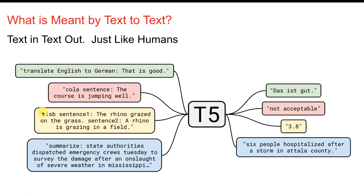STSB is a common sub-component of many benchmarks. It measures how similar two sentences are — for example, 'the rhino grazed on the grass' versus 'a rhino is grazing in a field.' Fields are usually made of grass, so those are pretty similar. And finally we have summarization: 'state authorities dispatched emergency crews Tuesday to survey the damage after an onslaught of severe weather in Mississippi' is summarized to something much smaller. That looks pretty amazing in terms of what these latest algorithms are capable of.